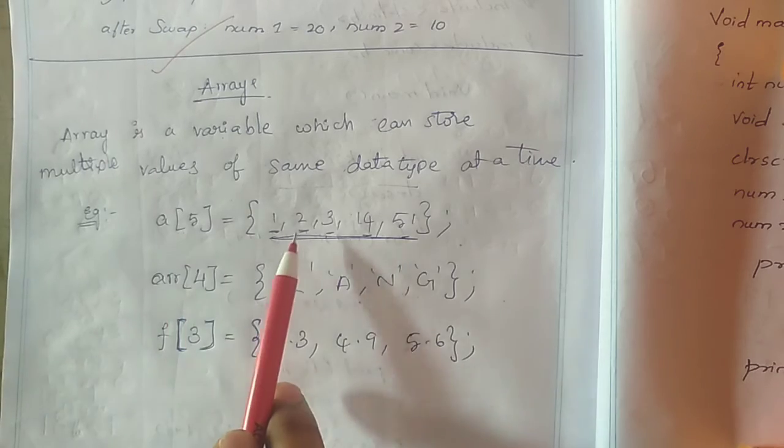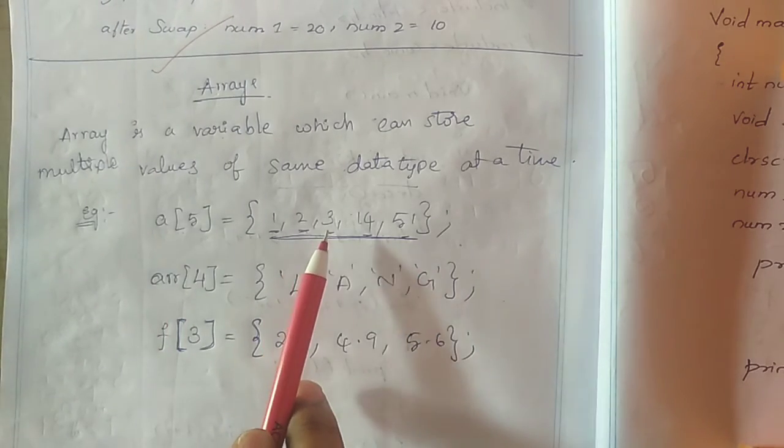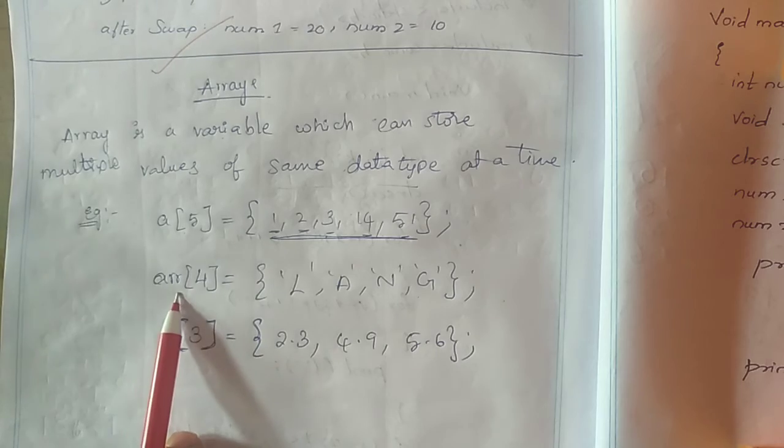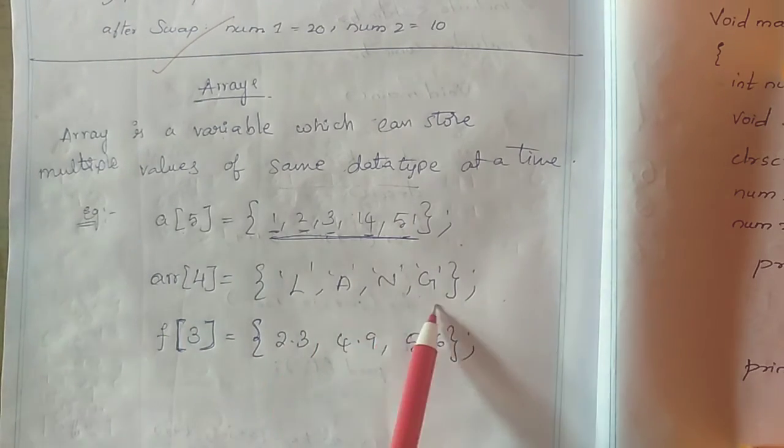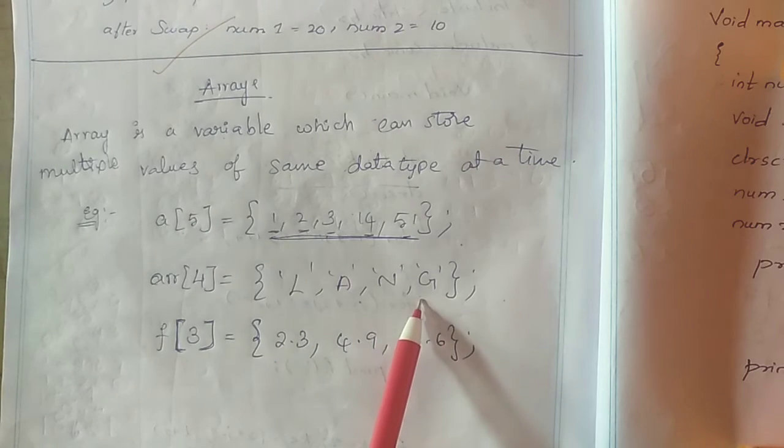A is an integer array having all integer elements. ARRR is a character array having multiple character values.